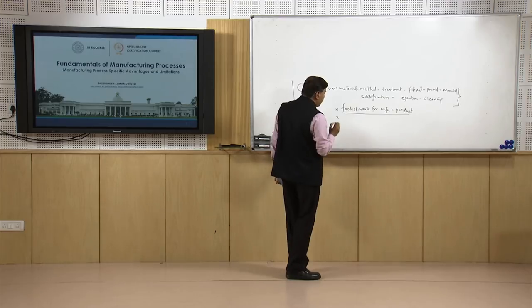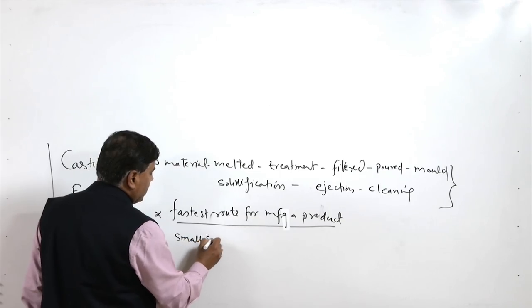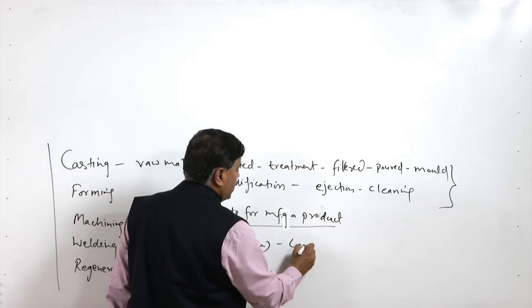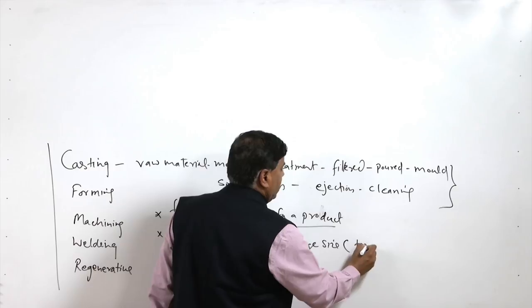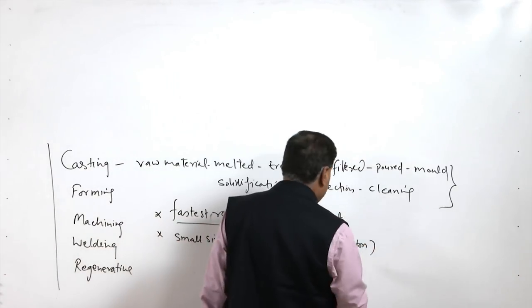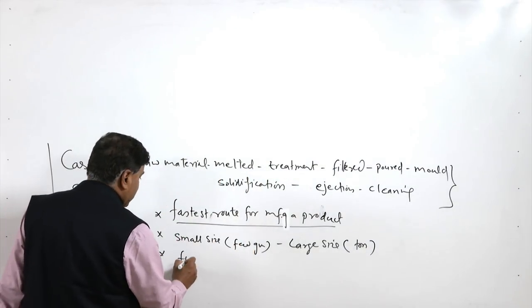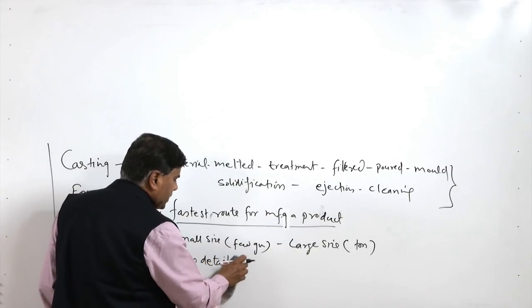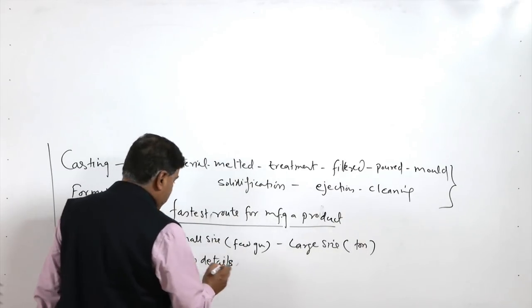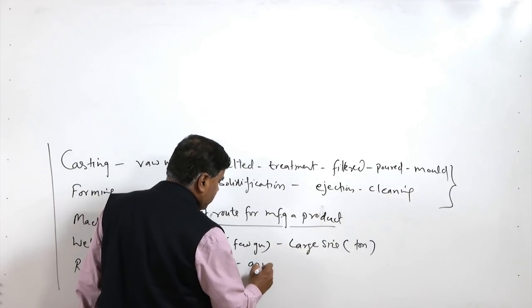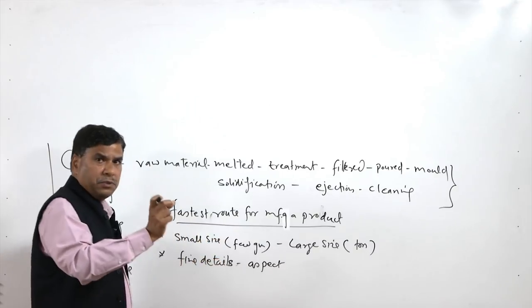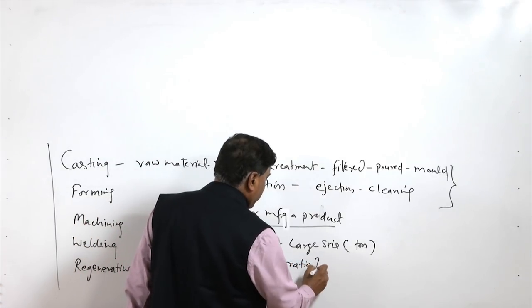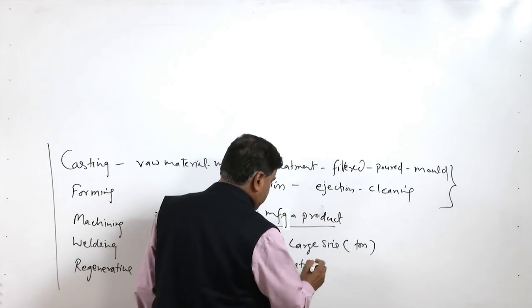Casting can be used for making products of very small size — maybe a few grams — to very large size, maybe a few hundred tons. Very fine details can also be achieved in the products. A quite good aspect ratio, meaning the height to thickness or width of slots and grooves that can be achieved, is very good — so the aspect ratio achievable is also high.